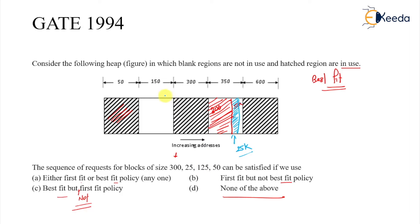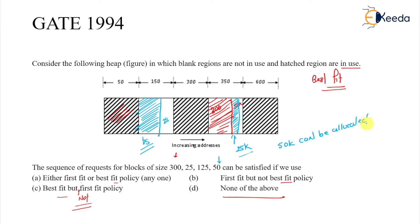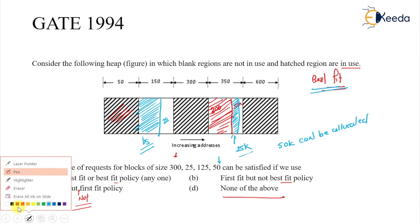Then 125 comes and I allocate it here — 125k — leaving only 25k. Then 50k comes and that 50k cannot be allocated. So best fit method is not able to allocate all the memory requests properly.